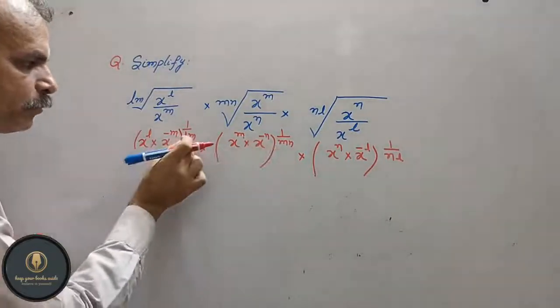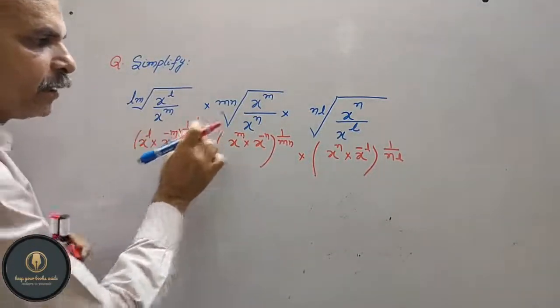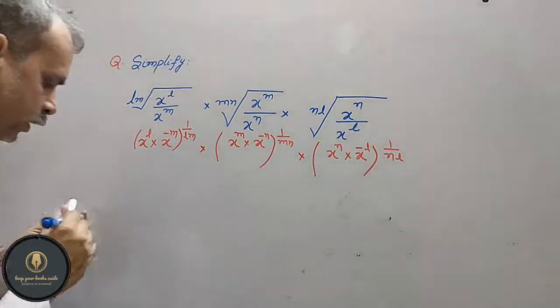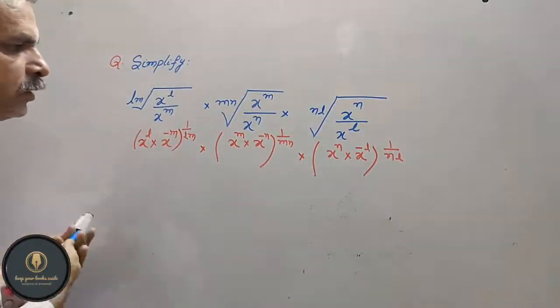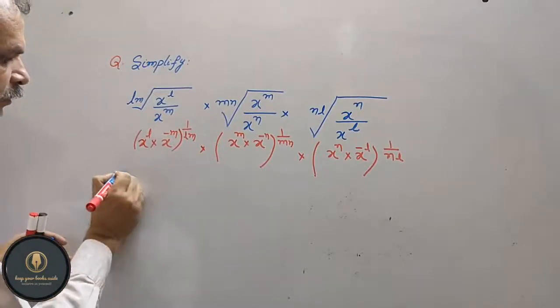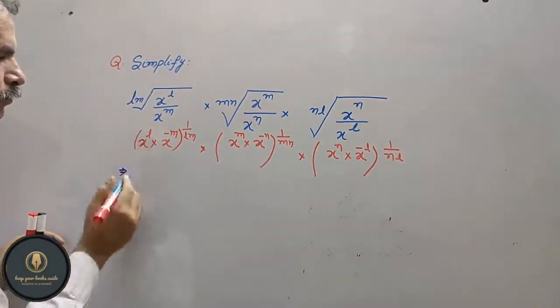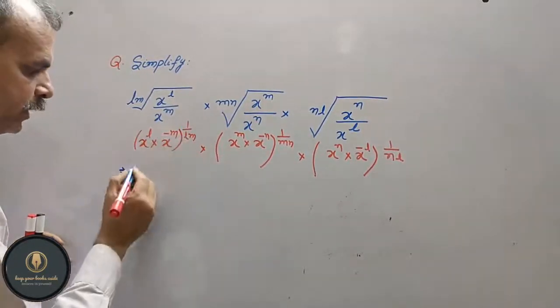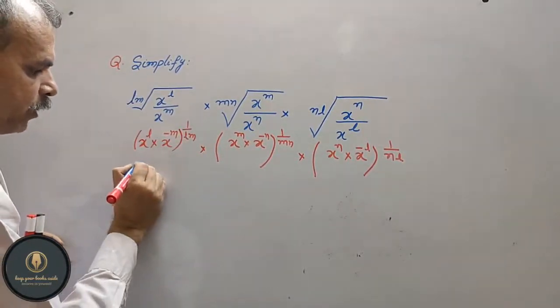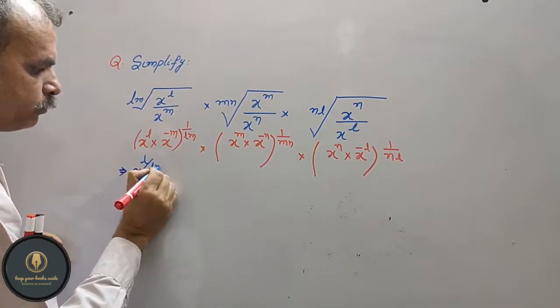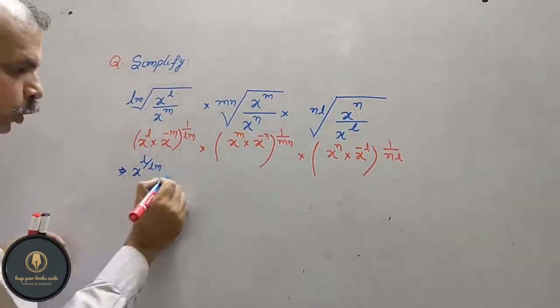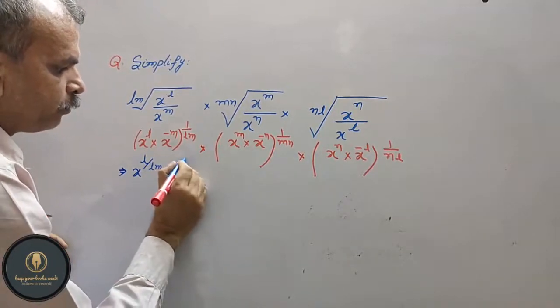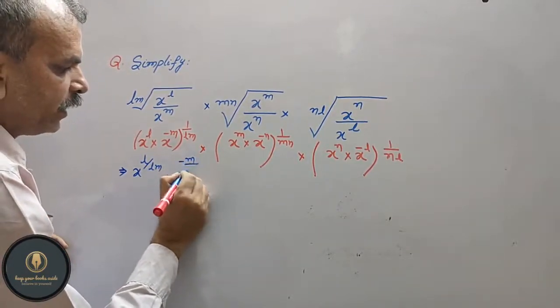Now what will we do? We multiply the power with each term. Let's see what we get. We multiply: x to the power of l into lm, that means x to the power of l by lm, into x to the power of minus m by lm.